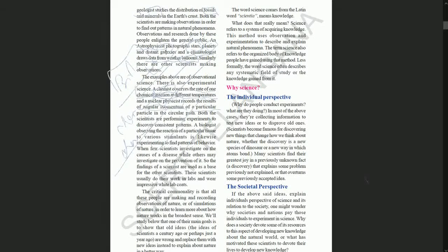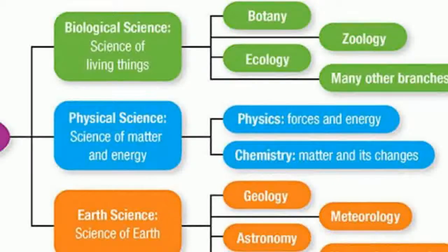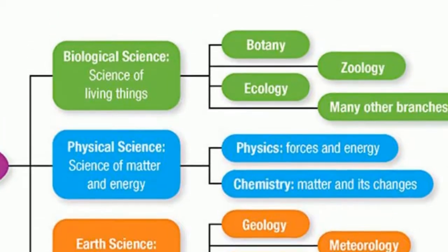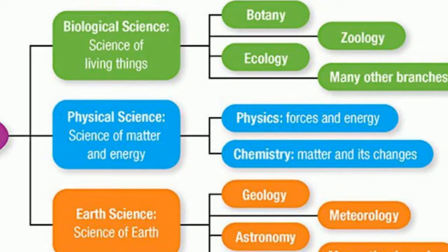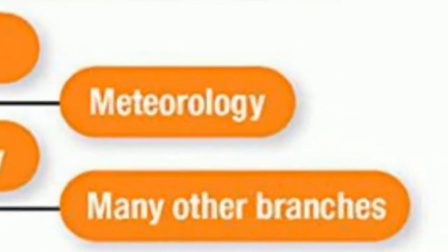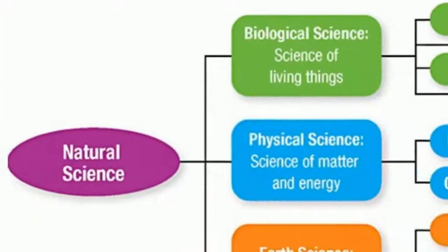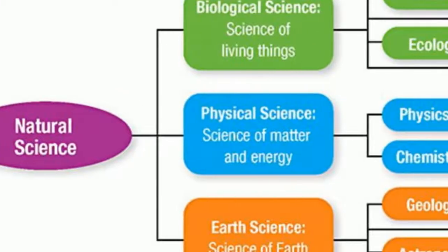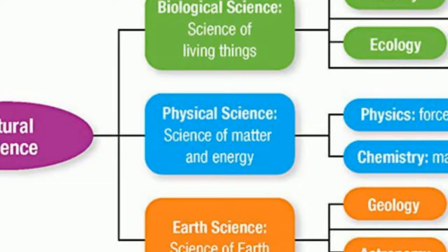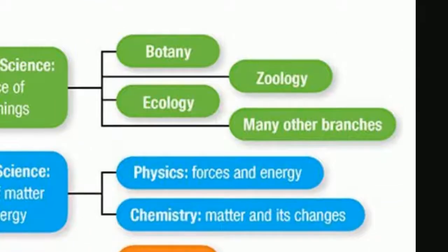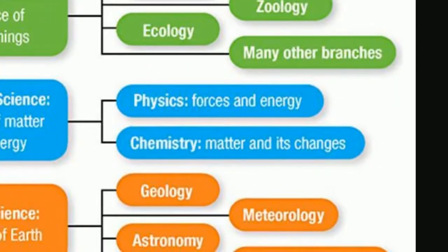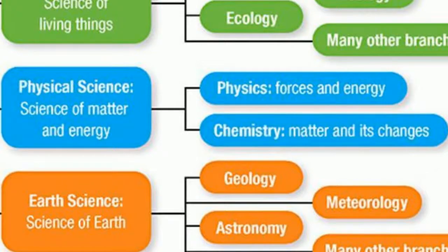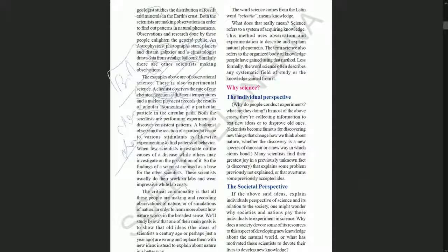You can see here branches of science. One branch is divided into biology, physics, and earth science. Different branches are there - you just note in your workbook. Natural science is divided into three types: biological science, physical science, and earth science. Biological science has divided into many types - botany, ecology, zoology, and other branches.